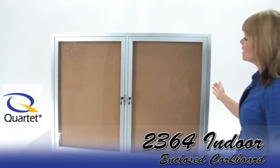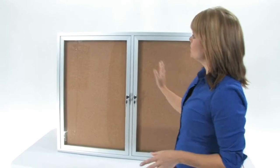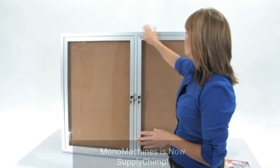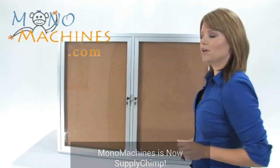This is the Quartet 2364 enclosed cork board. It's for indoor use and as you can see we've got a 3 foot by 4 foot aluminum frame. We've got two display windows and I'm going to show you how to use it.